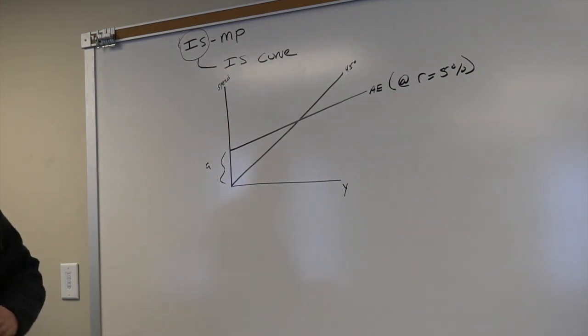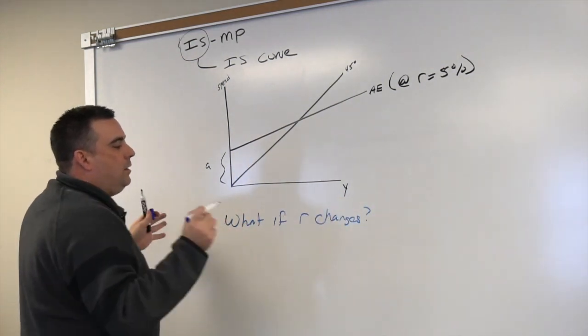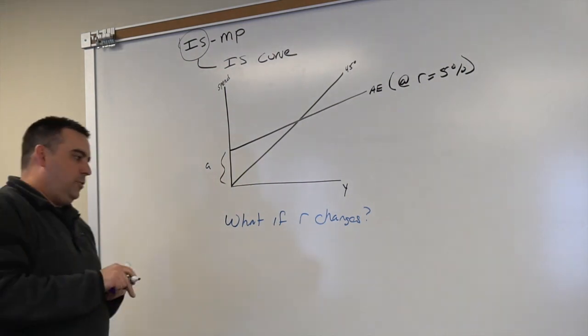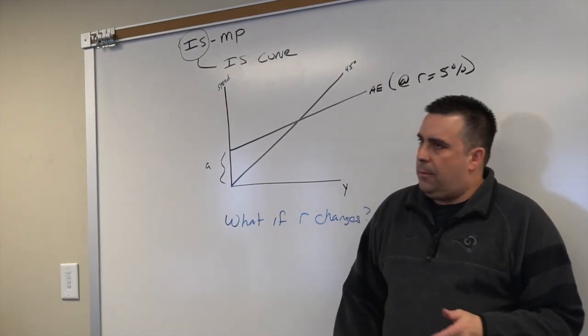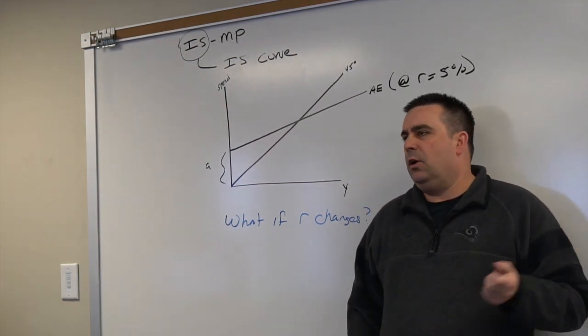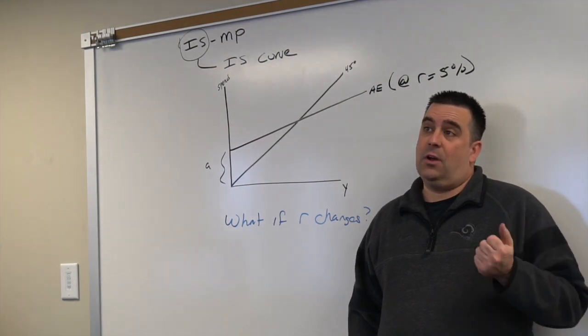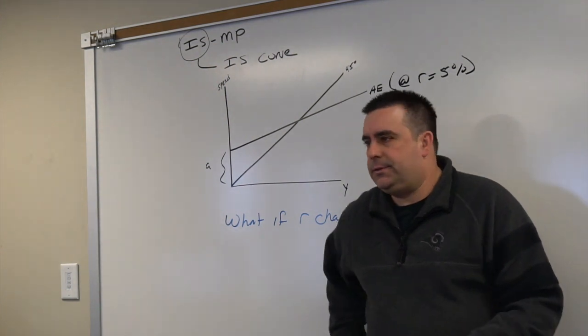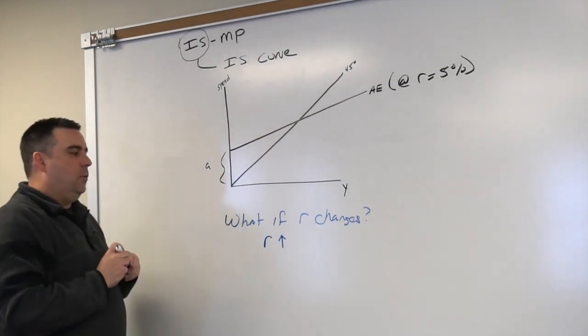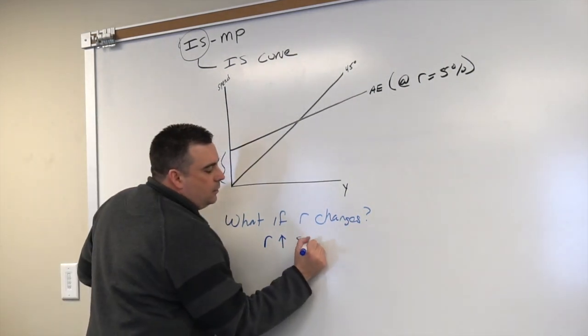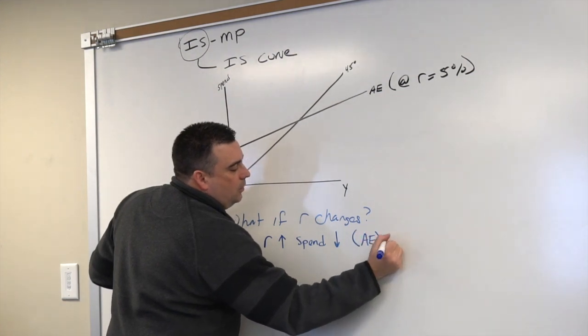So then the question becomes, what if the interest rate changes? How does that impact our model? Well, if the interest rate rises, let's say it goes from 5 to 10%, what impact do we expect that to have on spending? At 5% people are still buying houses, buying cars. At 10%? Probably not going to be as likely to buy a house, not likely to buy a car. Effectively, we would expect spending to fall. So if R goes up, we expect spending to go down.